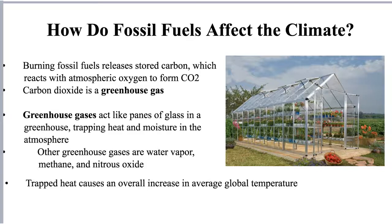When coal is burned and carbon is released, that carbon reacts with oxygen already present in the atmosphere to form carbon dioxide. Carbon dioxide is one of the compounds described as a greenhouse gas. If you've ever been inside a greenhouse, you know it is much warmer inside than outside, because the glass acts as an insulator — sunlight energy can penetrate the glass and warms the interior before those energy waves can escape again. Greenhouse gases behave in a similar manner to the panes of glass in a greenhouse, by trapping heat and moisture inside the atmosphere.